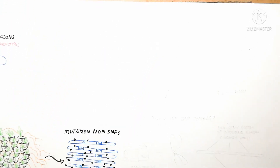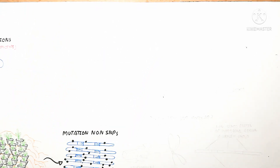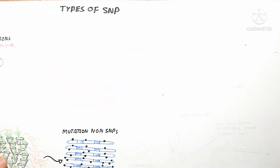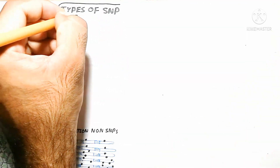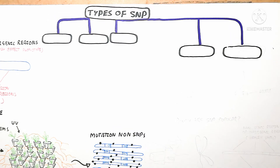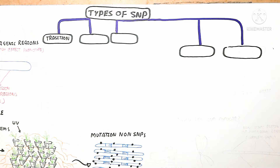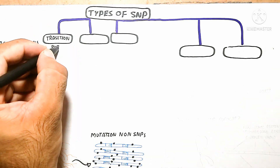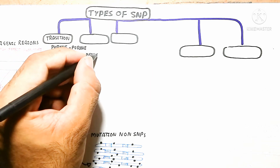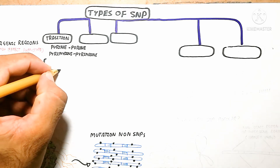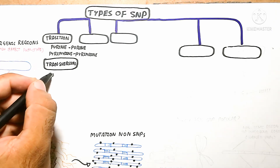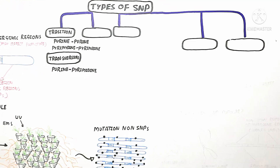Now let's understand the types of SNP, which are also used as technological tools. The types include: transition, non-coding and coding, and homozygous and heterozygous. Transition means purine to purine and pyrimidine to pyrimidine changes. Purine is a double-ring nitrogenous species, while pyrimidine is a single-ring nitrogenous species — cytosine and thymine are pyrimidines.